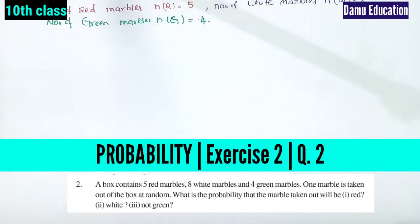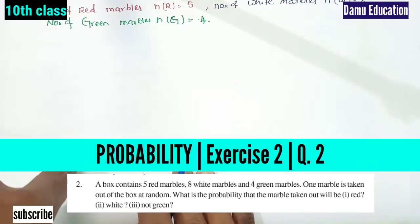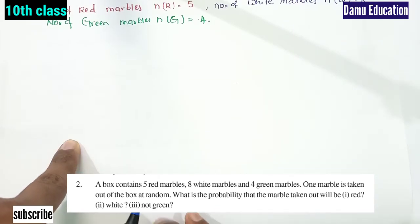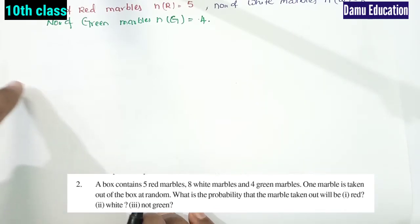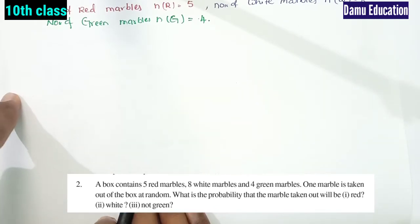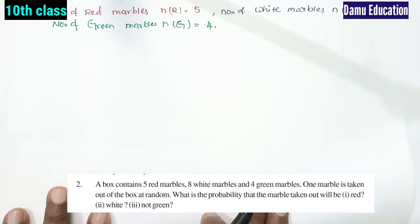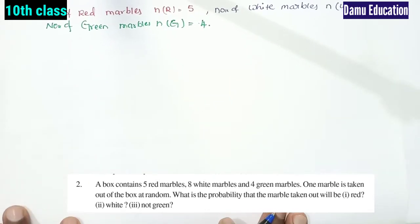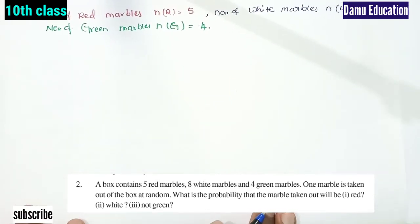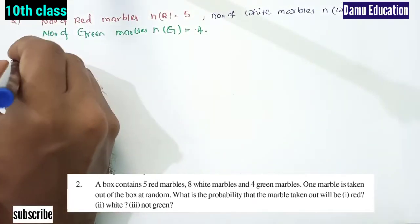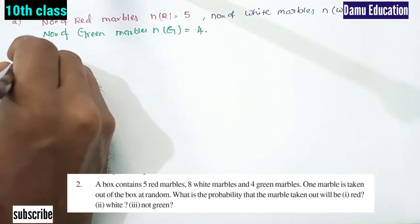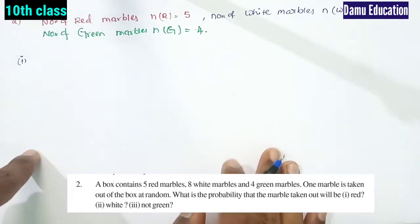One marble is taken out of the box at random. What is the probability that the marble taken out will be — first one will be red.